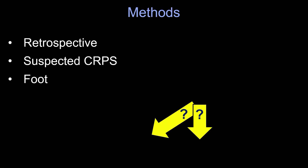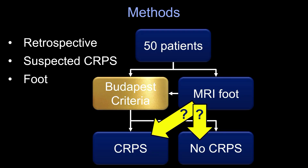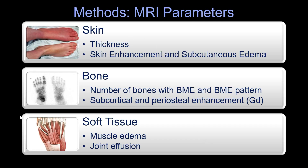For that, we constructed a retrospective study and looked for patients referred to our institution with suspected CRPS of the foot. We managed to get 50 patients who all went through the clinical pathway with the Budapest criteria and had an MRI of the foot. Based on this MRI, we wanted to see if we could make the distinction between CRPS and non-CRPS. We had a collection of very detailed findings and created some scores.